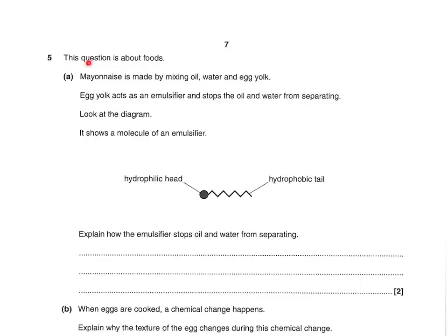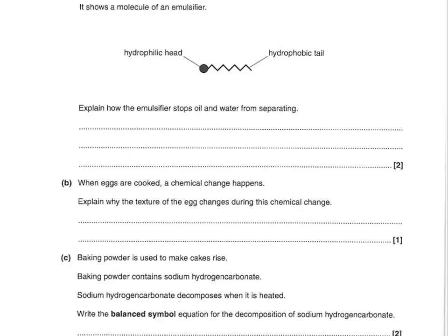This question is about foods. Mayonnaise is made by mixing oil, water, and egg yolk. Egg yolk acts as an emulsifier and stops the oil and water from separating. Look at the diagram showing the molecule of an emulsifier — it has a hydrophilic head and a hydrophobic tail. Explain how the emulsifier stops oil and water from separating. All you've got to say is the hydrophilic end bonds to a water molecule, and the hydrophobic end bonds to an oil molecule. Instead of bonds you could say attracted to, sticks to, or joins to.